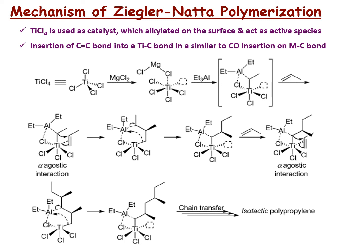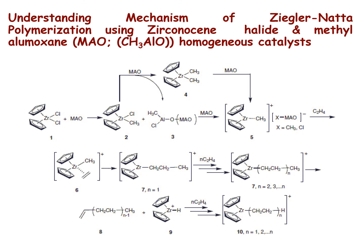The polymeric species forms and chain propagation occurs by introduction of additional olefin, giving an isotactic polymeric chain that continues to propagate. At the end, beta-hydride elimination occurs, yielding isotactic polypropylene as the product. This is the proposed mechanism for the Ziegler-Natta catalyst, and this mechanism has been supported using organometallic homogeneous catalysts — specifically zirconocene halide with methylaluminoxane (MAO), which is analogous to the Ziegler-Natta system and also gives the isotactic structure of polypropylene.